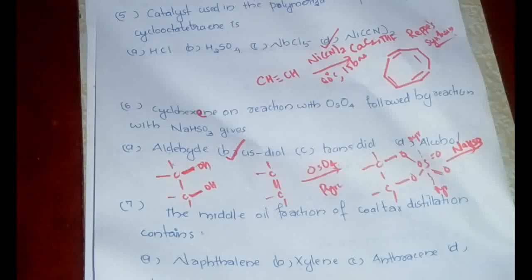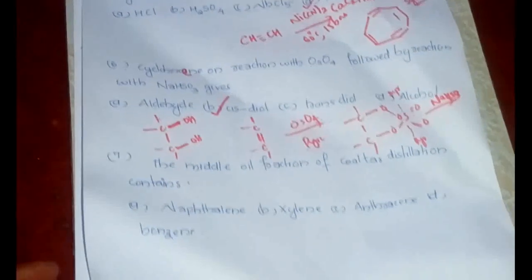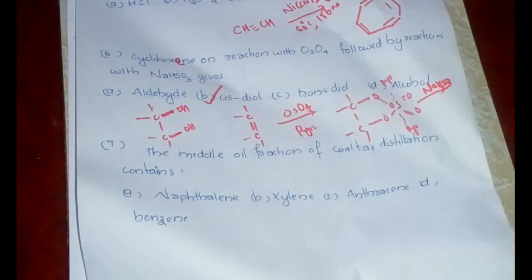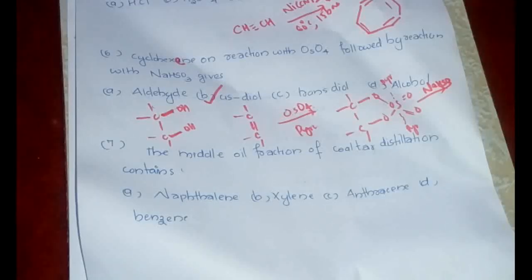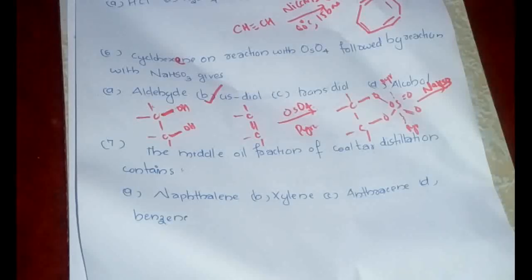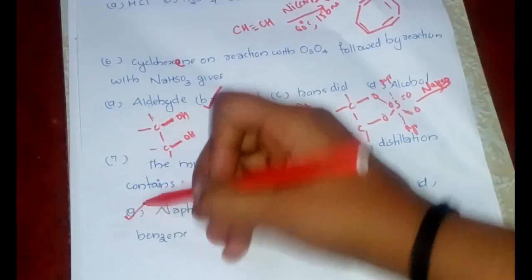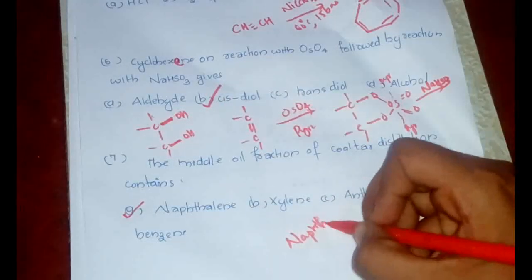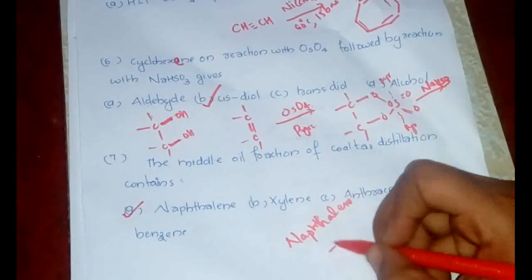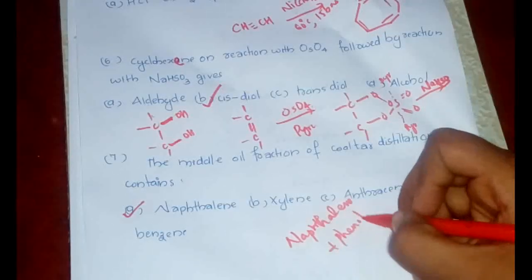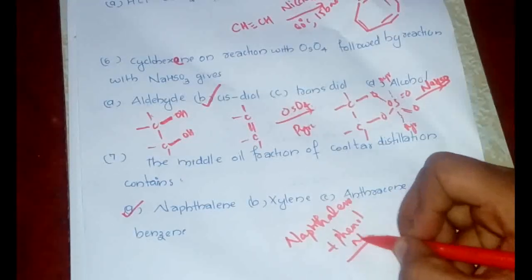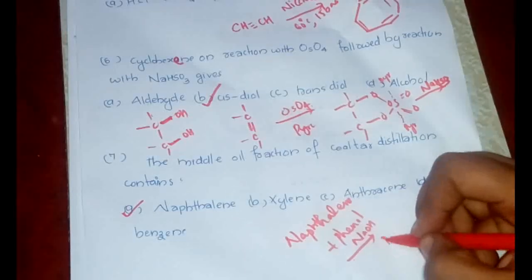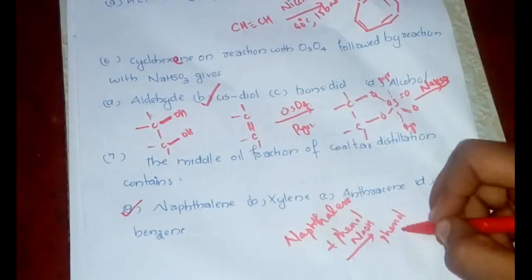Now the next question: the middle oil fraction of coal tar distillation contains what? This is very important because this is asked even in government level exams. The answer would be naphthalene. If we are checking some details, this mainly consists of naphthalene plus phenol mixture.